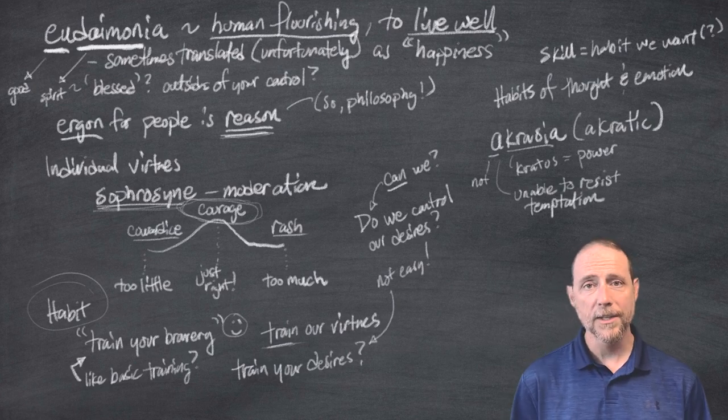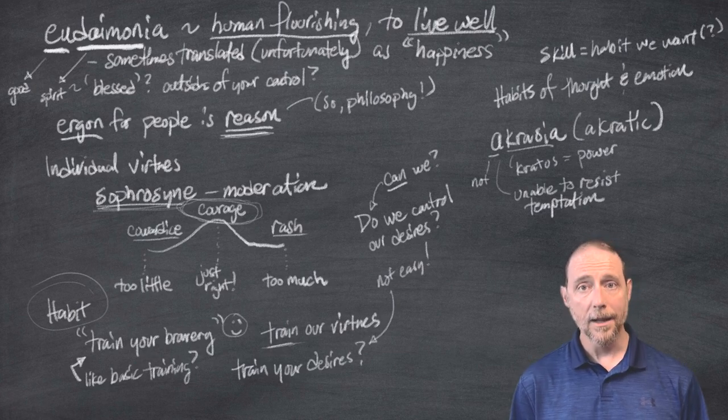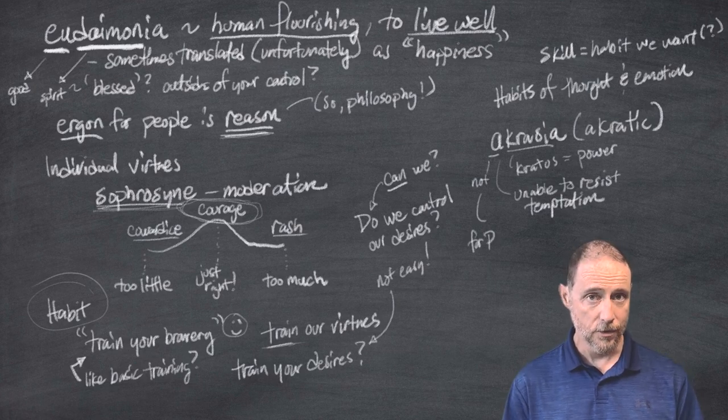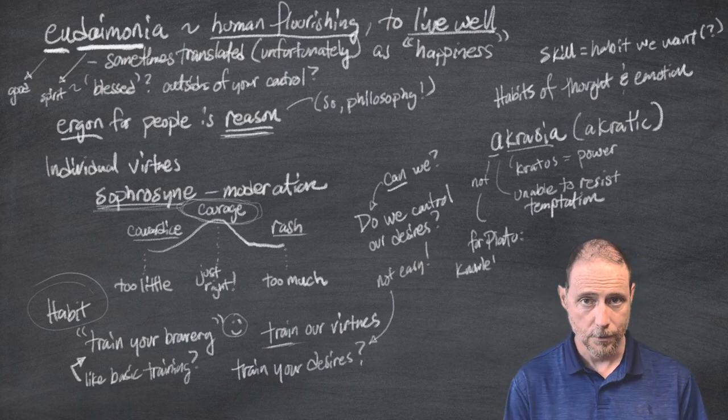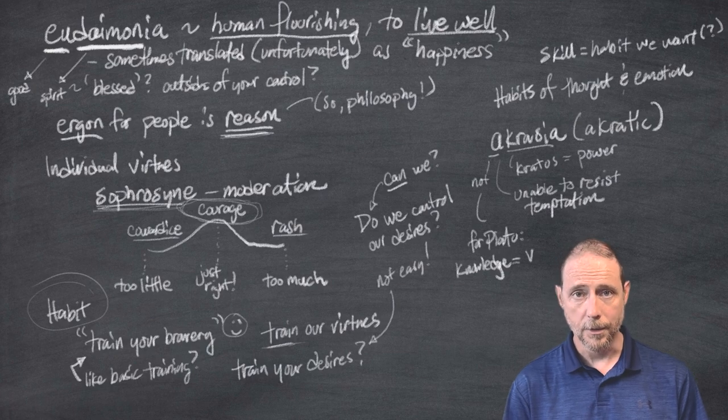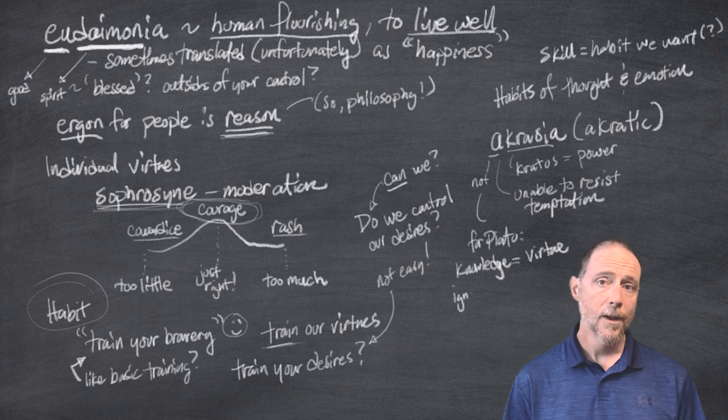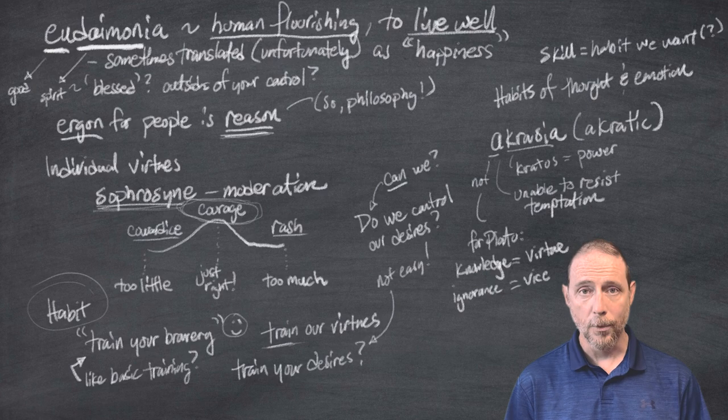That might seem perfectly obvious, but for Plato, this is not what we hear. For Plato, knowledge is virtue. And so if you know what's best, if you genuinely know what's good, which begs the question of what knowledge really means for Plato, then you cannot help but to do it. You were drawn ineluctably to do it. And so the exercise of virtue then is the same as knowledge, which means that Plato can say that a lack of virtue is the same as ignorance. And so this is just not the case in the same way for Aristotle. That's another important idea that we get in the Nicomachean Ethics that you should be aware of.